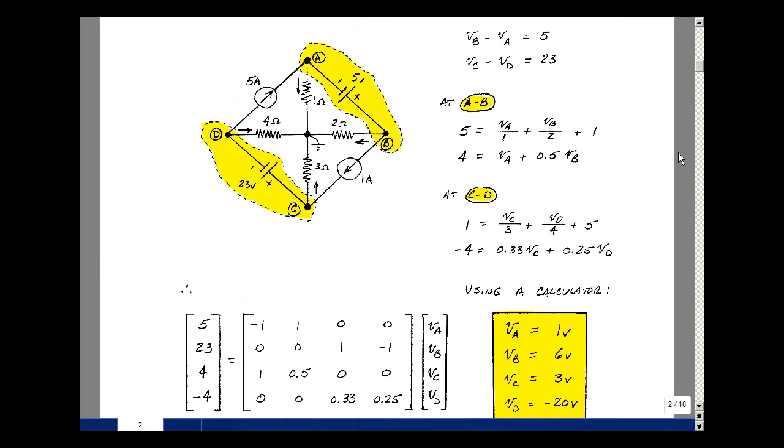I actually have a 4 by 4 matrix. I have the fact that 5 volts is equal to minus V sub A plus V sub B. If we think of this column associated with our first variable, V sub A, V sub B, V sub C, and V sub D.